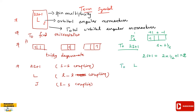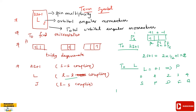Next, find the L value using LL coupling. For P1, the electron is in a P orbital, so we add the magnetic quantum number: L equals plus 1. L values 0, 1, 2, 3, 4 correspond to S, P, D, F, G. So L equals 1 gives orbital label P.